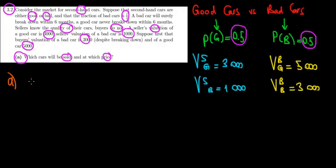In part A we must calculate the price the buyer is willing to pay. That would be a half times the worst case scenario, so a half times the value of getting a bad car, which is 3,000 euros.